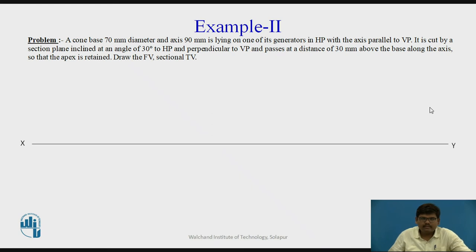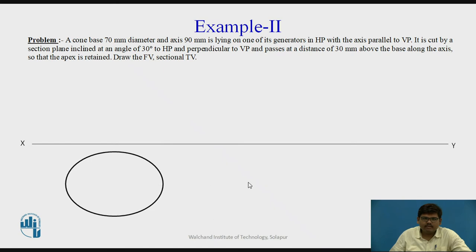This is the XY line or the reference line. To draw the cone resting on one of its generators, we assume that initially the cone is resting on HP on its base. When the cone is resting on its base, in the top view we see the circle. We know the dimensions of the circle — that is 70 mm — so we draw a circle of 70 mm. We divide this circle into equal number of parts; minimum the circle has to be divided into 8 parts for better drawing. We name the parts as 1, 2, 3, 4, up to 8.